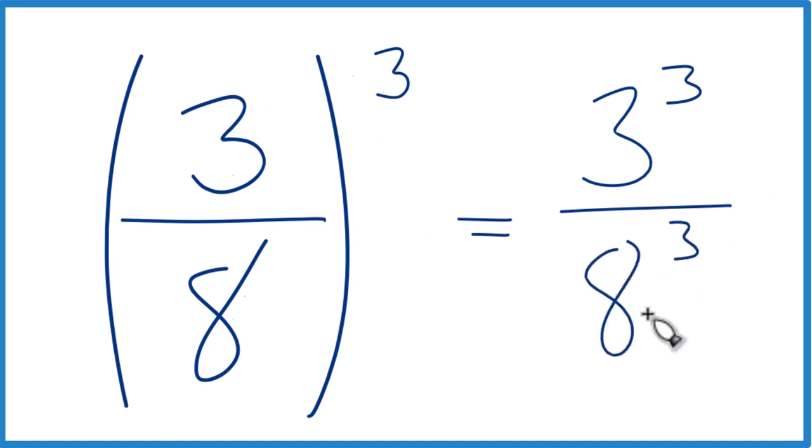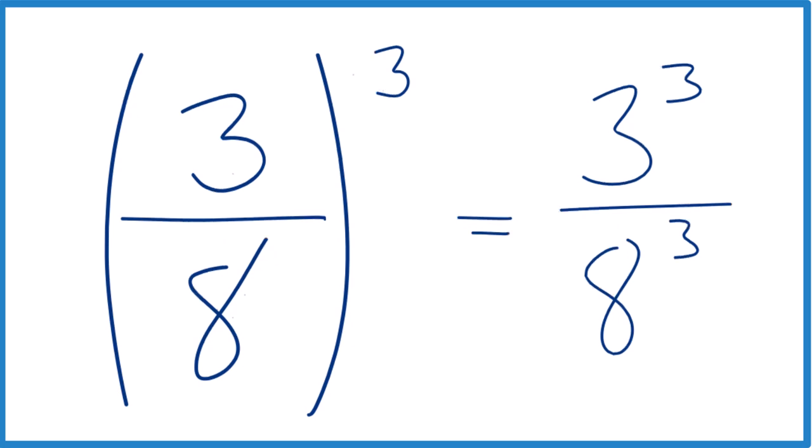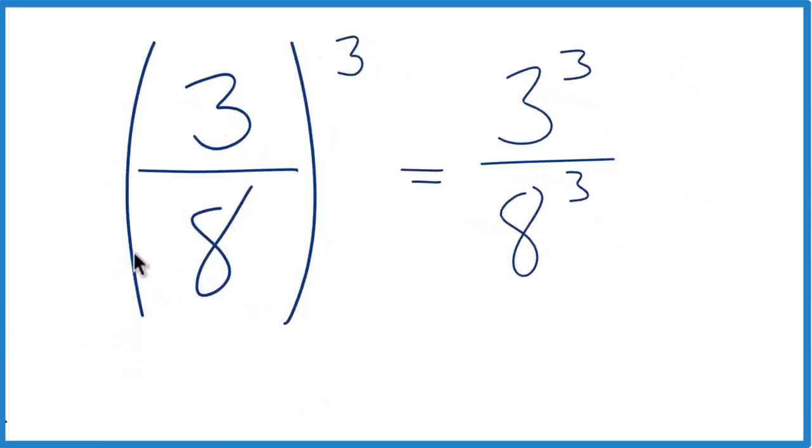And these are the same thing, they have the same value, just different ways to write it. You can think about it like this here. We have 3 eighths cubed, that's 3 eighths times 3 eighths times 3 eighths, like this.